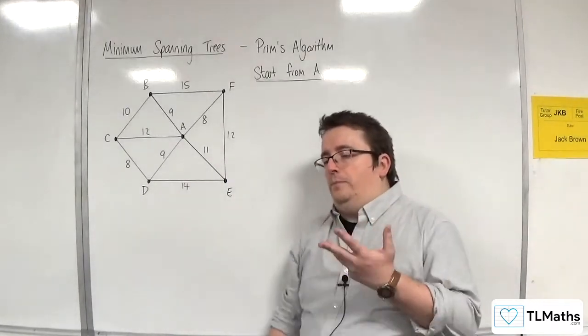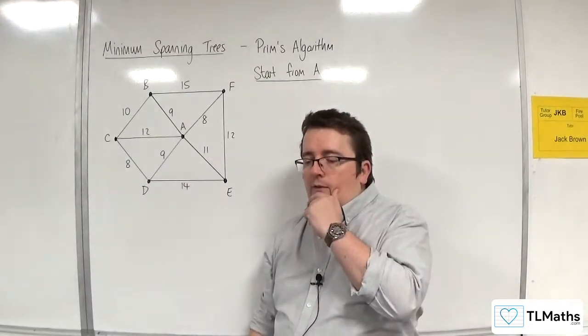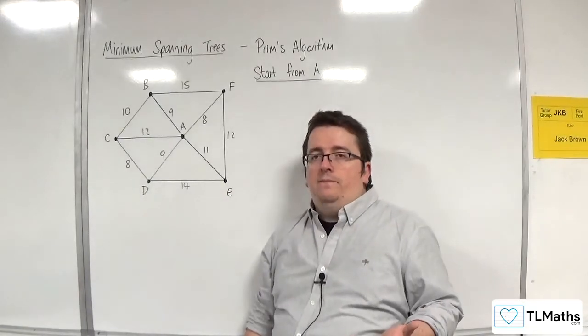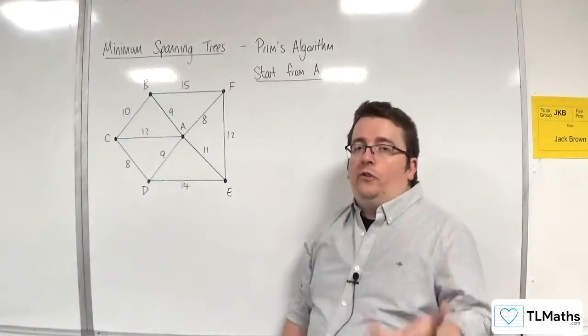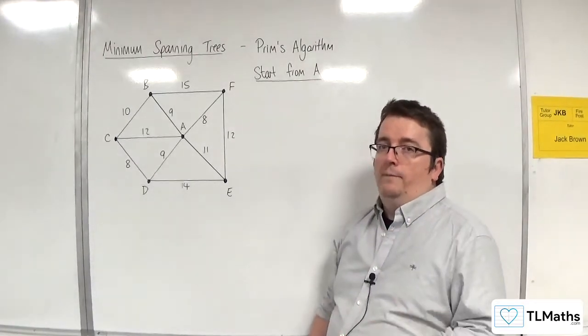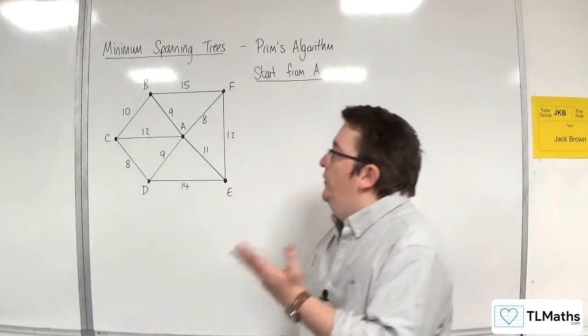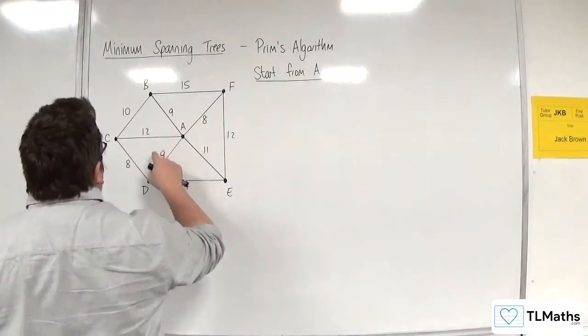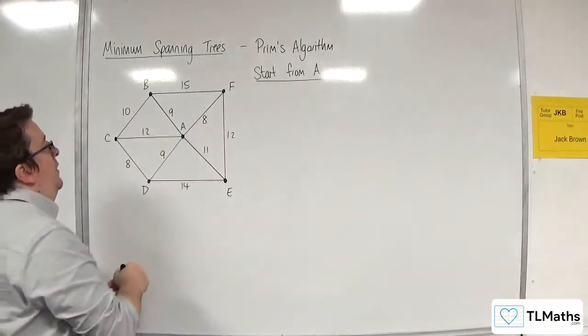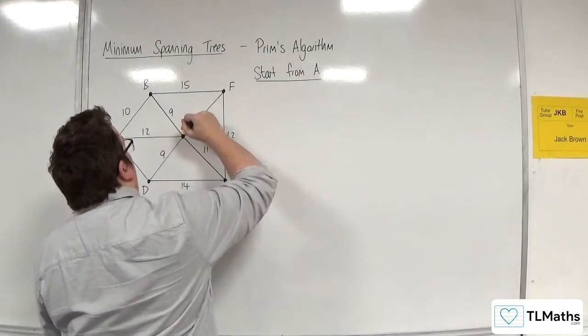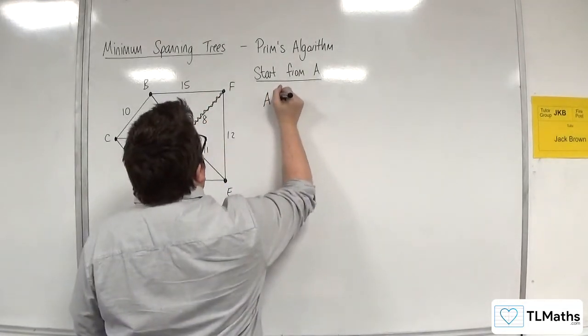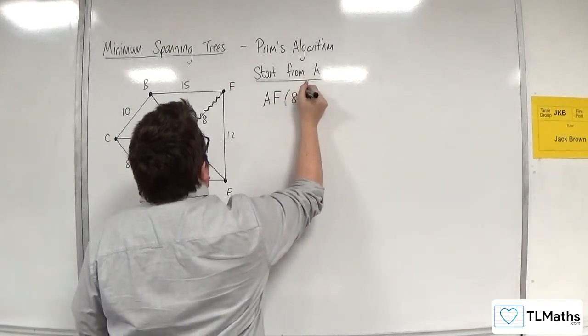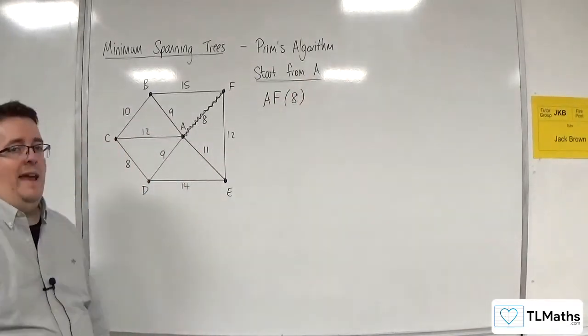So the way that this works is starting from A, you look at all of the edges coming out of A and you select the shortest one. So we've got 9, 12, 9, 11, and 8. So 8 is the smallest. So that will be selected. And I write down A, F and in brackets 8. So that's the first edge I have selected.